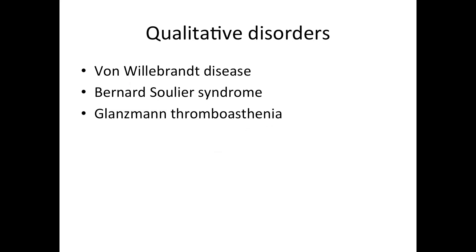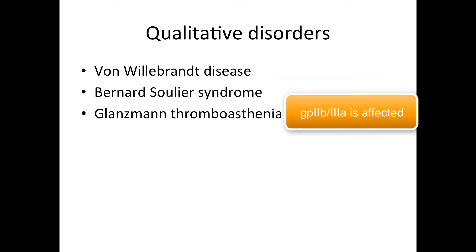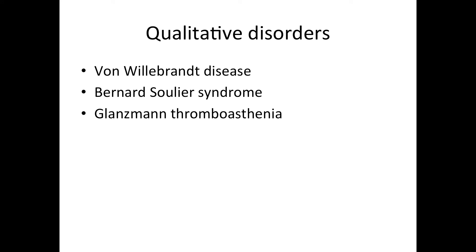In qualitative disorders, we have von Willebrand's disease, in which there is a deficiency or defective von Willebrand factor; Bernard-Soulier syndrome, in which glycoprotein 1B (GP1B) is defective or deficient; and Glanzmann's thrombasthenia. All of these will be further discussed in the hematology section.